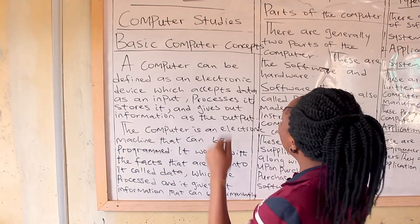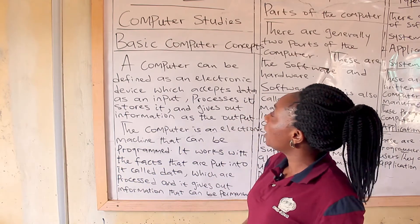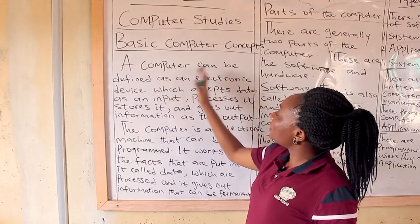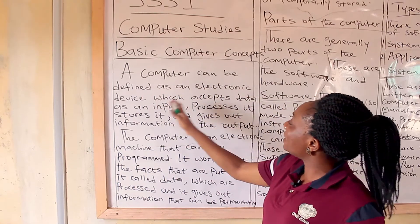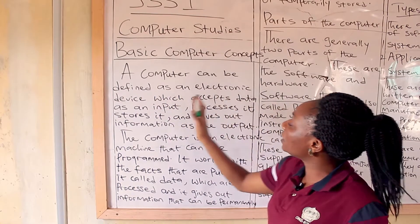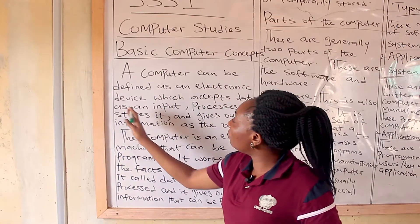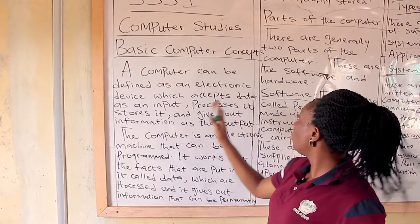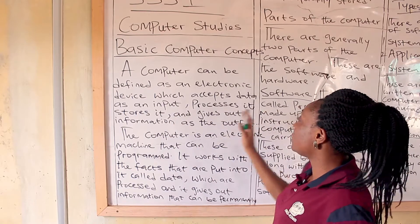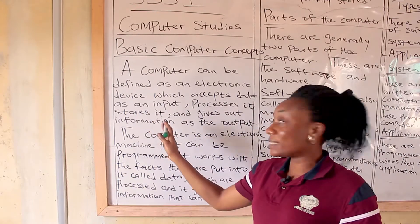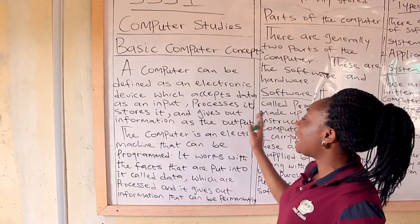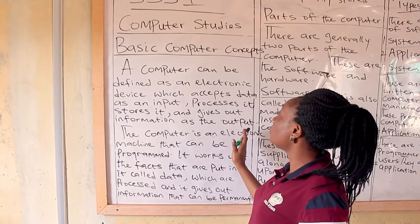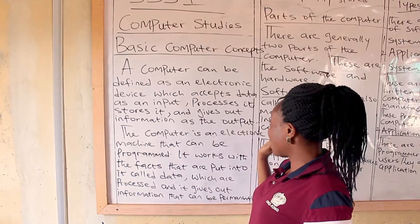So let's figure out how to define the computer. A computer can be defined as an electronic device which accepts data as an input, processes it, stores it, and gives out information as the output.